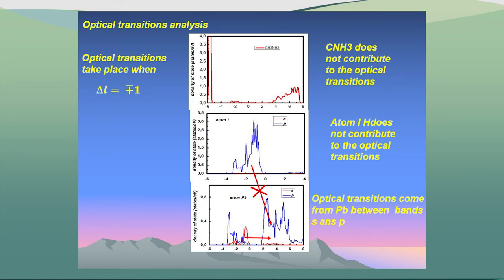Now we will analyze the optical transitions with precision. Here I present the projected density of states — the contribution from the organic part, from iodine atoms, and from Pb atoms. As you know, the transition takes place when the difference between orbital angular momentum quantum numbers is plus or minus one. We will use this condition and analyze which atom is responsible for the transition when the photovoltaic phenomenon takes place.